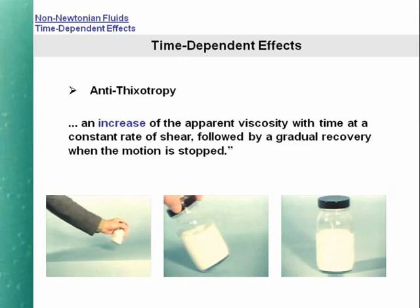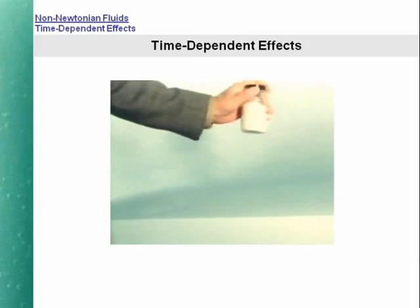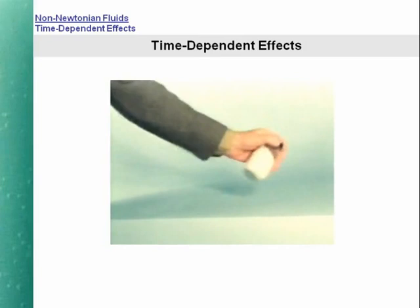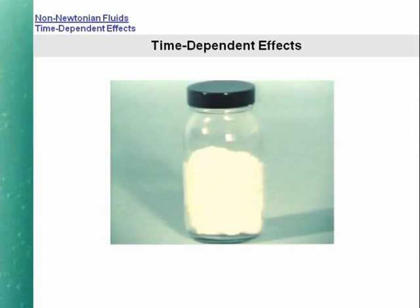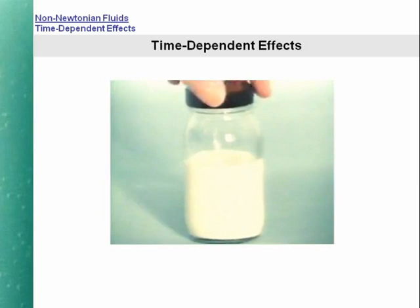Some non-Newtonian materials show an increase in apparent viscosity with time, with a gradual recovery when the stress is removed. This phenomenon is known by at least three terms: anti-thixotropy, negative thixotropy, or rheopexy. An example of such behavior is provided by an alkaline carbopol latex, which is quite mobile near the rest state. Vigorous shaking results in a dramatic increase in consistency. However, the latex returns to its initial consistency after about two minutes.